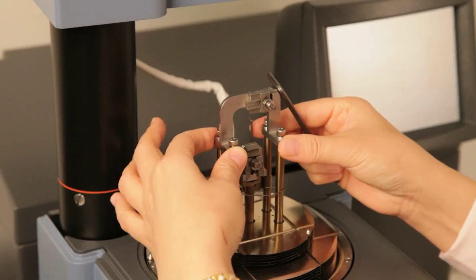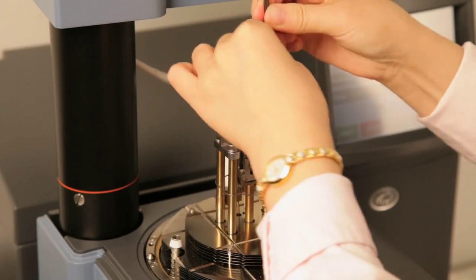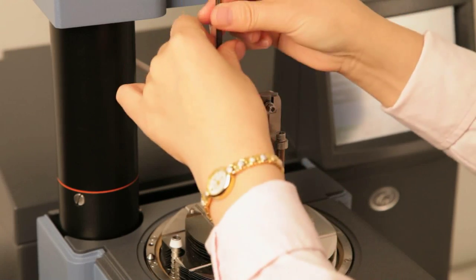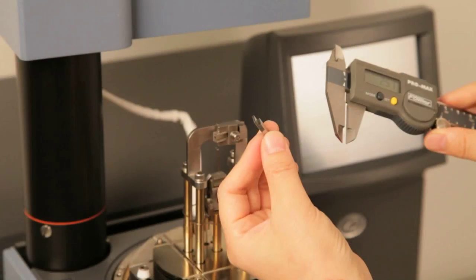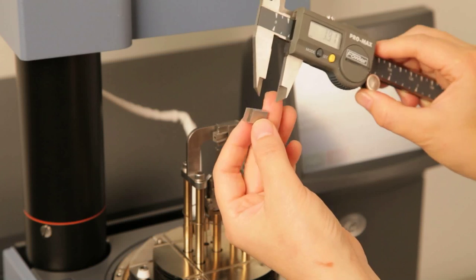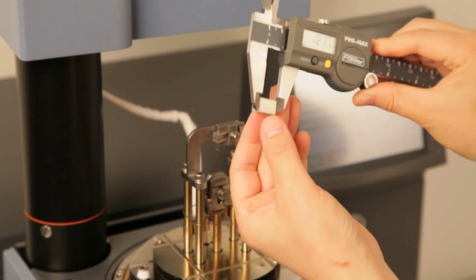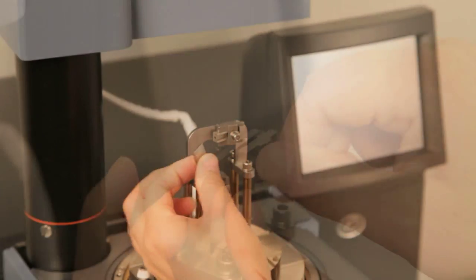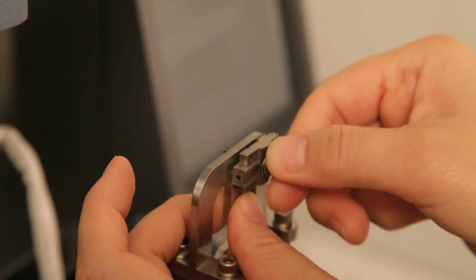For clamp zero calibration, install the stationary clamp to the instrument. Take the offset gauge from the clamp kit. Use a caliper to measure the length of the offset gauge. Then insert it into the upper clamp.